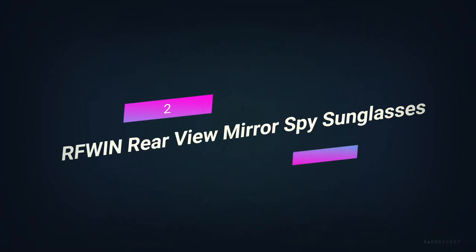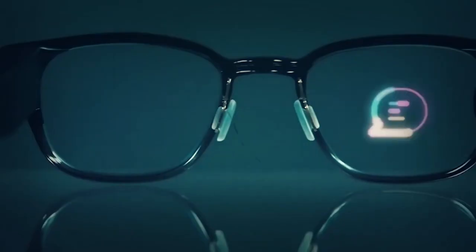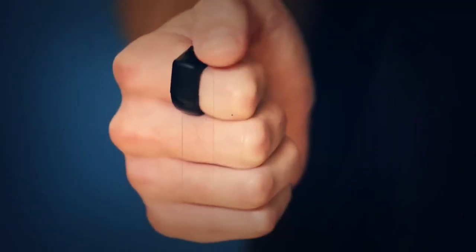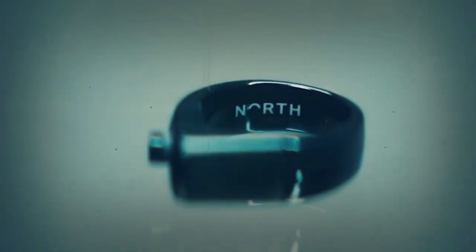Number 2, RFWin Rear View Mirror Spy Sunglasses. When you're spying on someone, you have to pay attention to everything going on around you. It looks like someone's following you, or what's going on while you're not looking. You can't just turn around all the time to see what's going on behind you. If you do this, the person behind you will find out that you're keeping an eye on them.